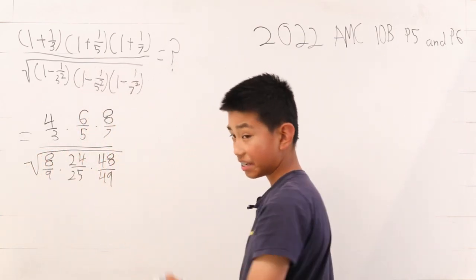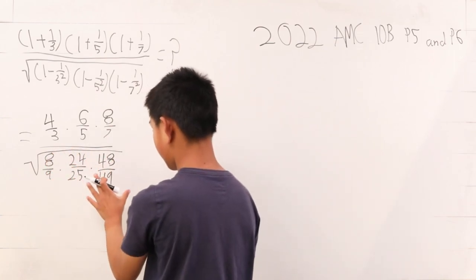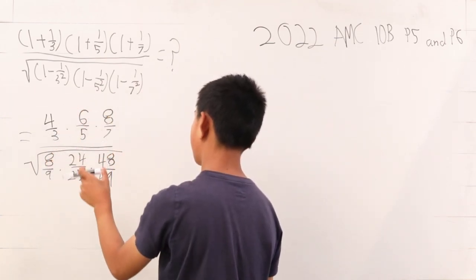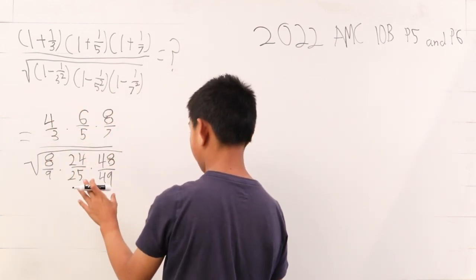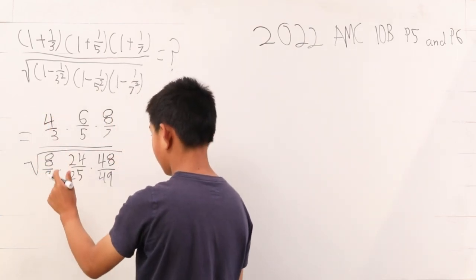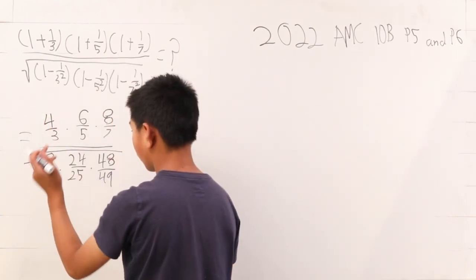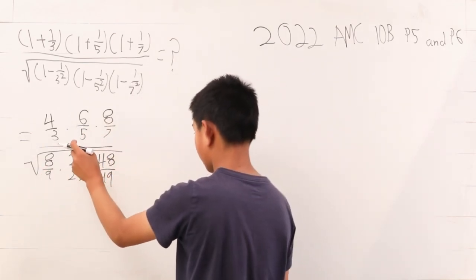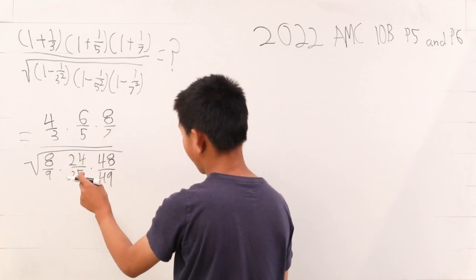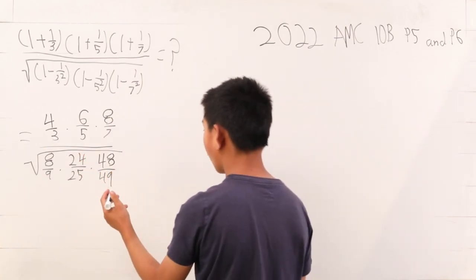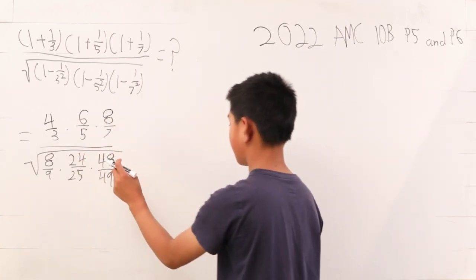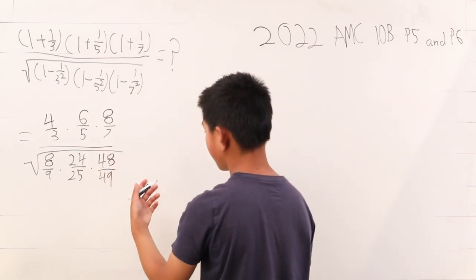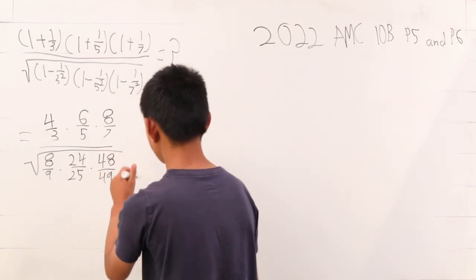We see here that these numbers can actually be broken up into these numbers up here. 8/9 is 4/3 times 2/3, 24/25 is 6/5 times 4/5, and 48/49 is 8/7 times 6/7.